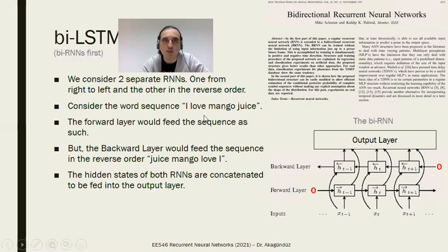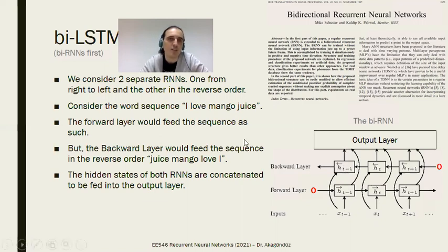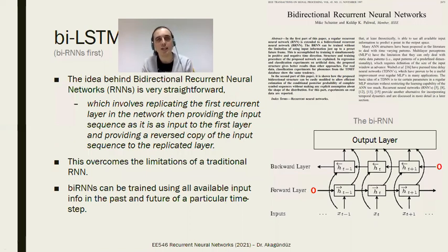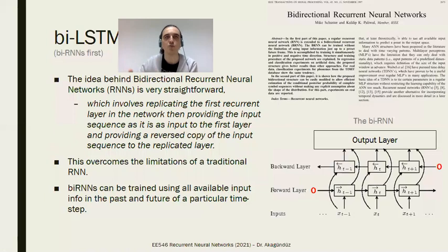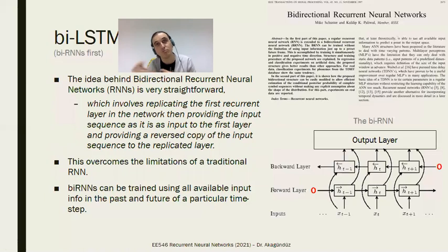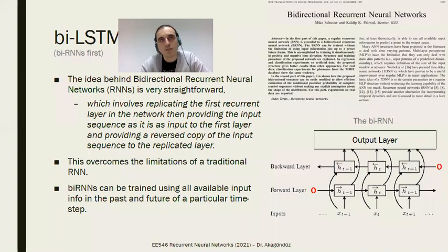While feeding these two separate sequences, you obtain two separate hidden states, and you use these corresponding hidden states to get the output layer. The idea behind bidirectional RNNs is very straightforward: replicate the recurrent layer, provide the input sequence as-is to one layer, and provide the reverse copy to the replicated layer. This addresses the limitation of traditional RNNs where dependencies flow in only one direction — bidirectional RNNs can be trained using all available input from both past and future at each particular step.